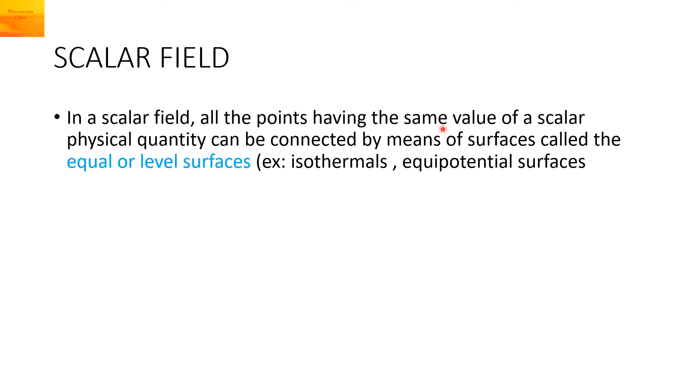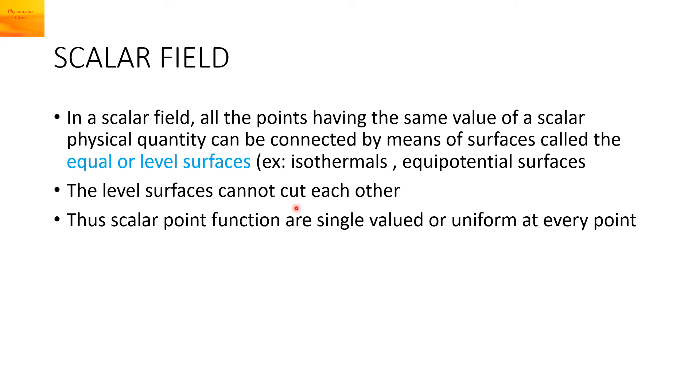In a scalar field, all the points having the same value of a scalar physical quantity can be connected by means of surfaces called equal surfaces or level surfaces. Examples can be the isothermals. In thermodynamics, we draw the isothermal curves at a constant temperature. Or we can speak about the equipotential surfaces. The level surfaces cannot cut each other.